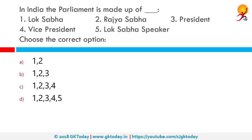In India, the Parliament is made up of which of the following? The correct answer is Lok Sabha, Rajya Sabha and the President. India has a bicameral Parliament made up of the President, the Rajya Sabha or Upper House or Council of States, and the Lok Sabha or Lower House or House of the People. While Rajya Sabha represents states and Union territories, Lok Sabha represents the people of India.